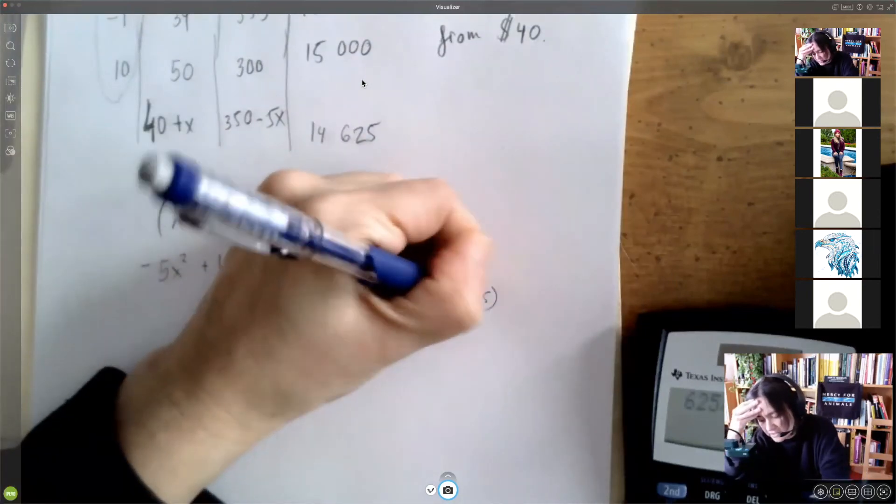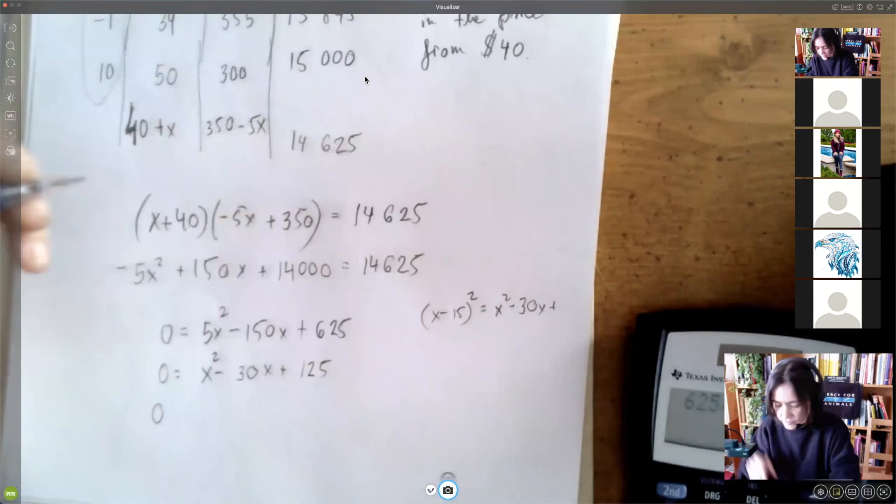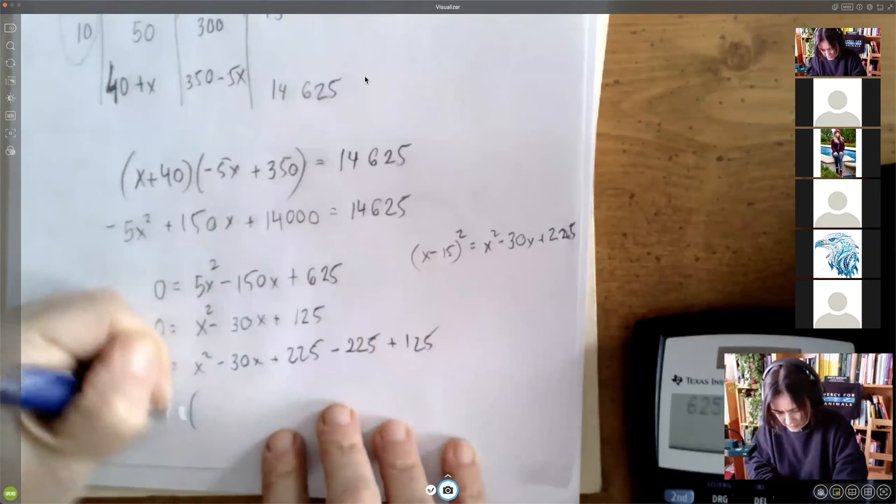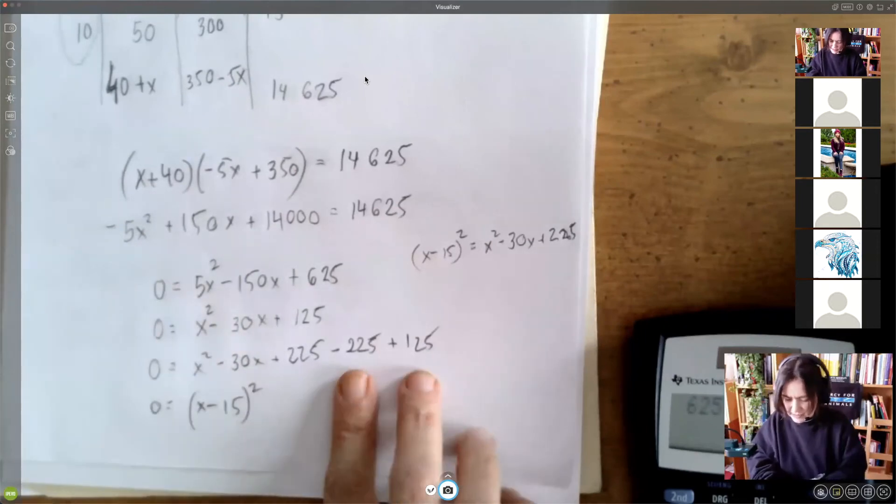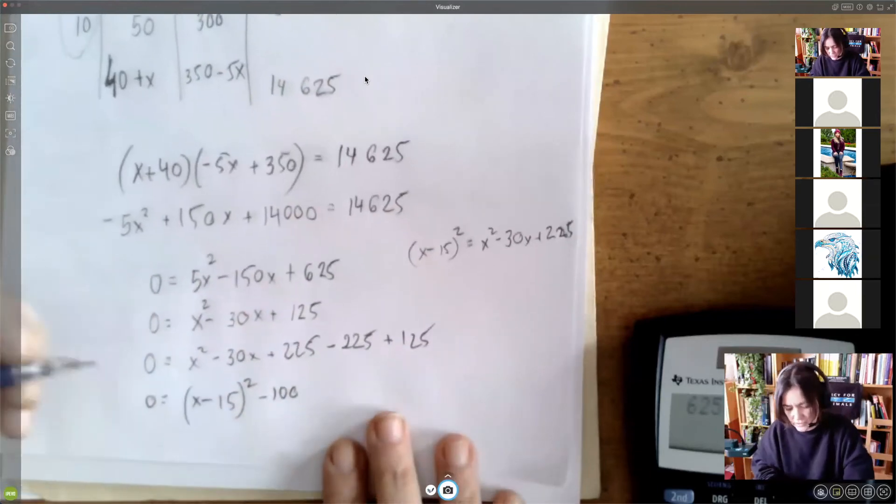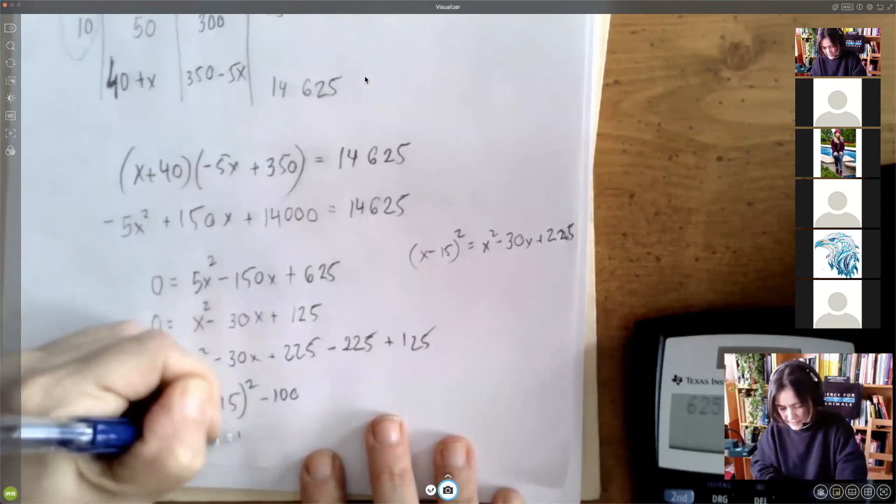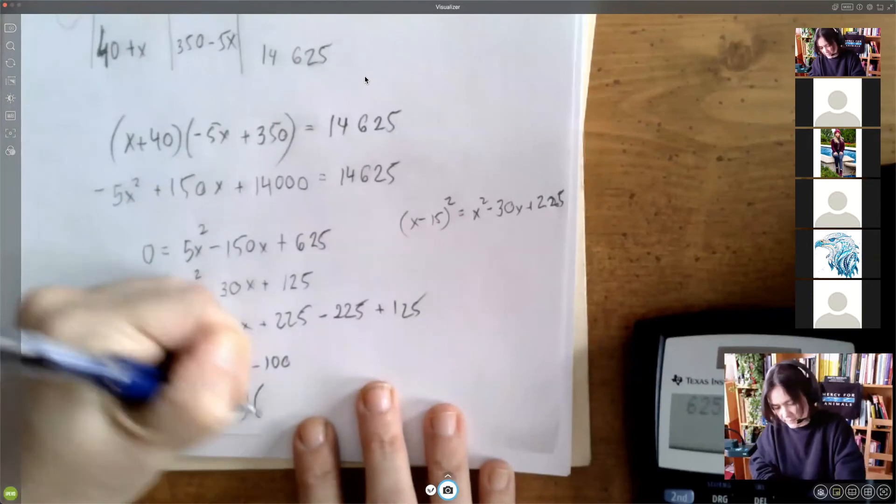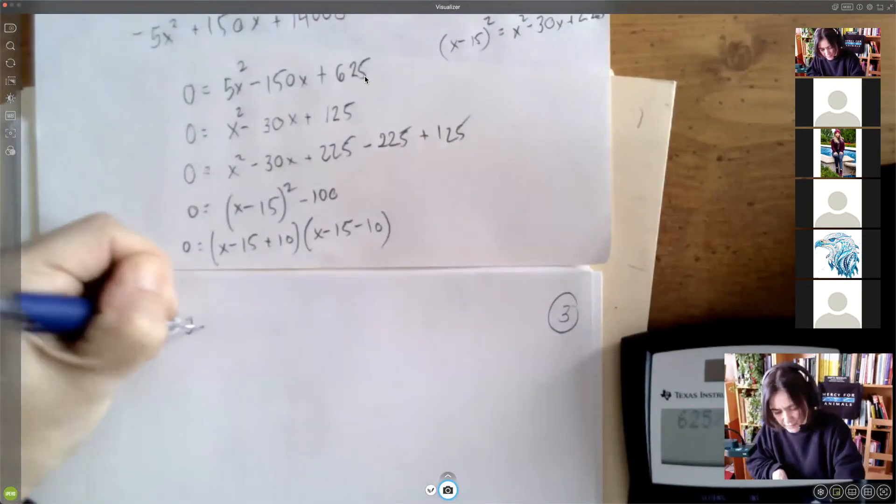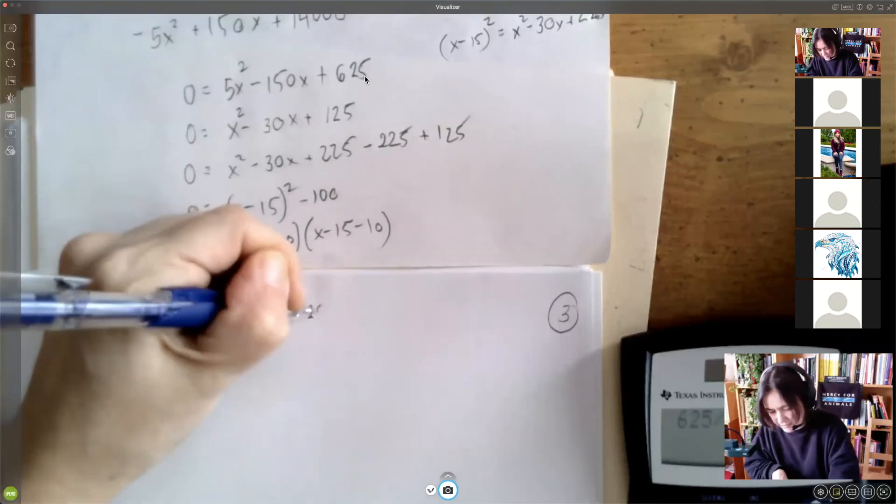The problems sort of lend themselves for completing the square. So, X minus 15 squared is X squared minus 30X plus 225. And so we're going to smuggle in the 225. So we have X minus 15 squared. And then this looks just 100. So we have X minus 15 plus 10, X minus 15 minus 10, which means that we have X minus 5 times X minus 25.